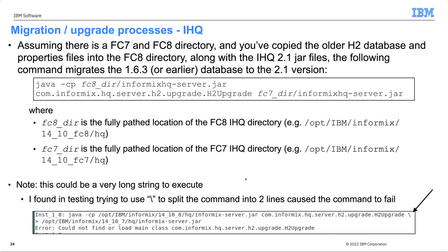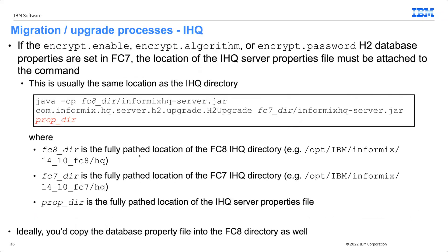The migration command starts with 'java -cp' followed by a very long string — it must be typed as one long line, as the backslash line-continuation didn't work in Linux VM environments. You'll need to specify your FC8 and FC7 directory paths. If you're using encryption with IHQ, several parameters need to be taken from the database properties file, and you'll need to know where the server database properties file with encryption credentials is located.